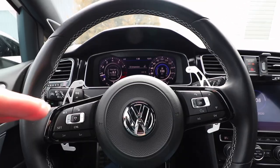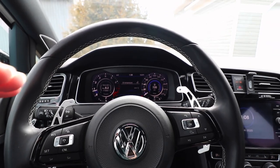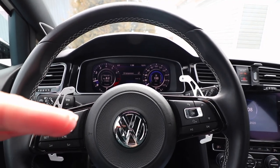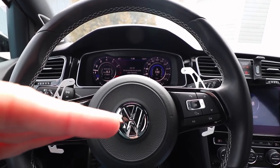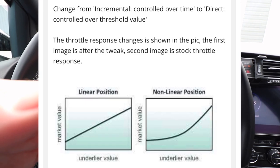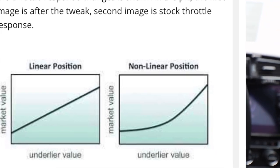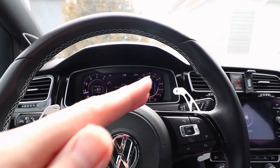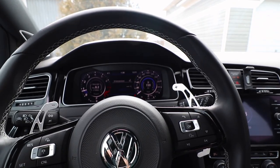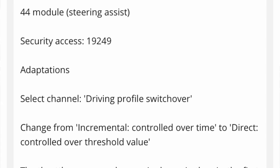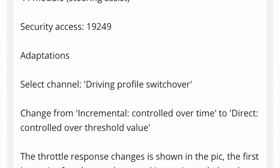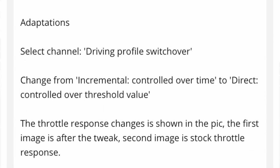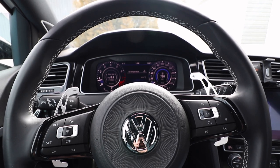On a Volkswagen, the initial throttle response is very much like a curve. It's based on time where the initial press of the throttle starts off low and then the longer that you hold it, it gradually ramps up the throttle response. I'm going to change that to more of an Audi style where it's more of a linear throttle curve. There are a couple of ways you can do that — one is through an adaption menu in steering assist, and the other is to change your engine coding to Audi.